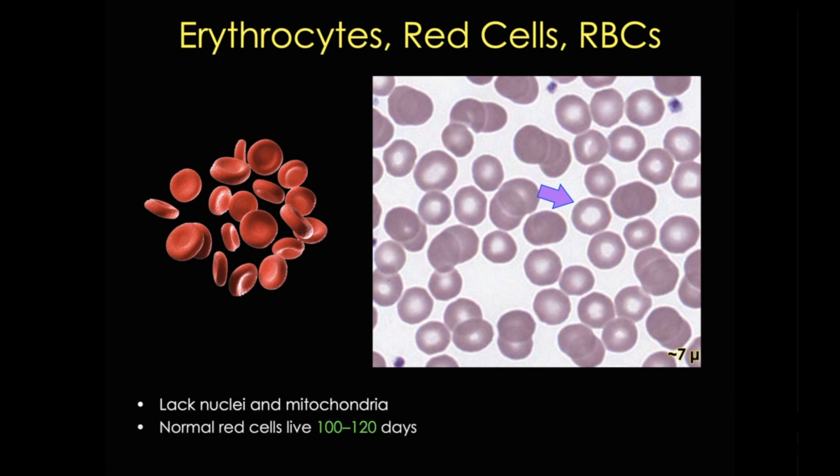Importantly, these are the only blood cells whose function doesn't require them to leave the blood vasculature. So if you see red blood cells in high numbers in a tissue, that means the tissue is damaged in some way.